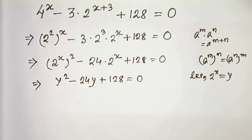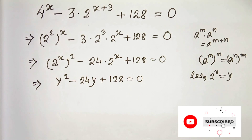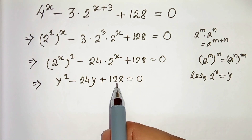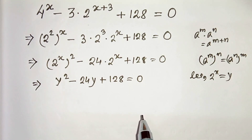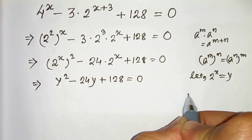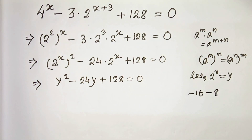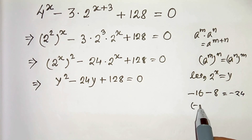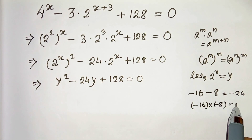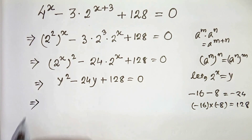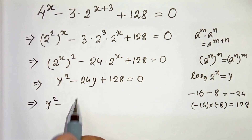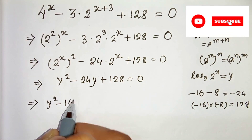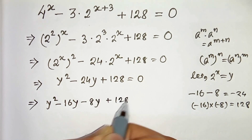Now we have to find the factors. We need to choose two numbers such that the product of those two numbers is 128 and the sum is minus 24. So we choose minus 16 and minus 8. If we add them we get minus 24, and if we multiply them we get 128. So we can write y squared minus 24y as minus 16y minus 8y, plus 128 equals 0.